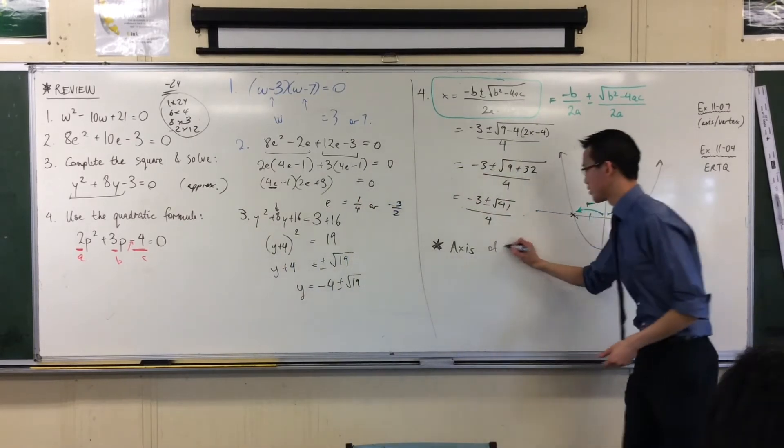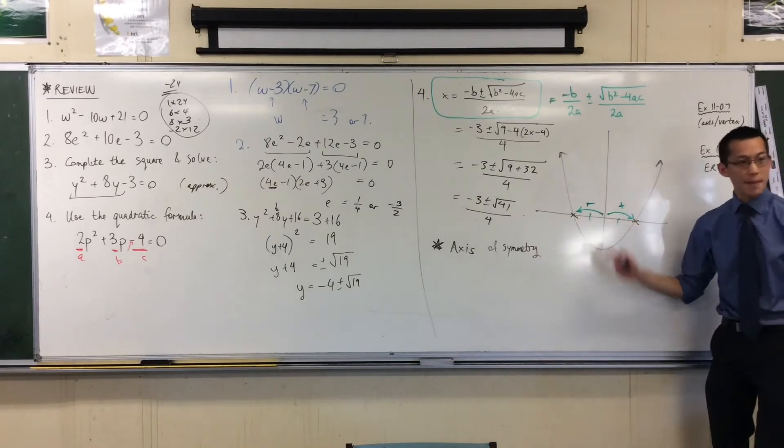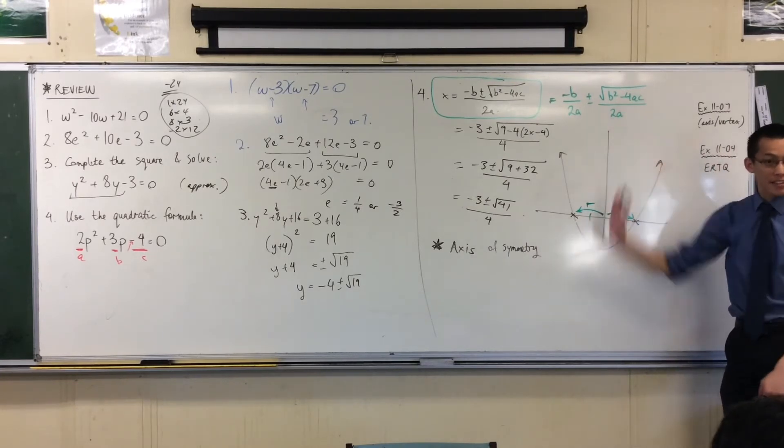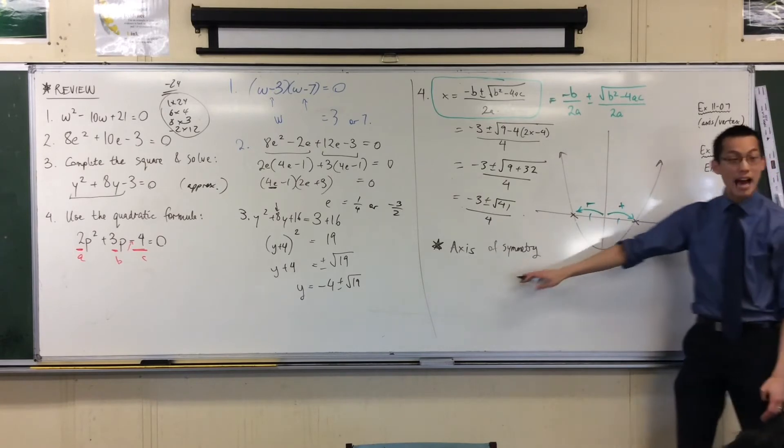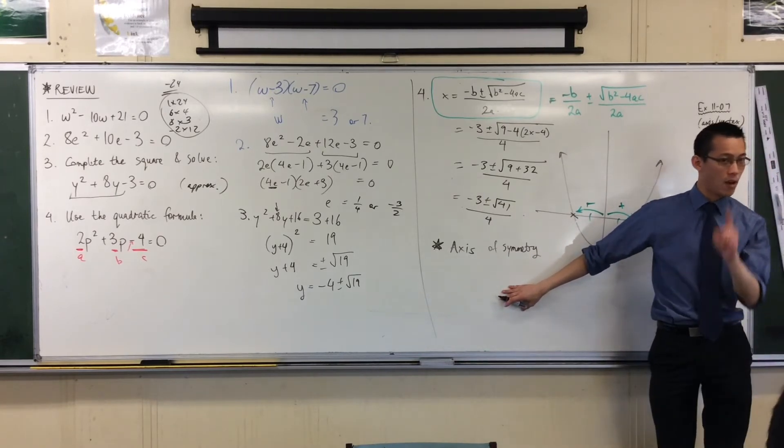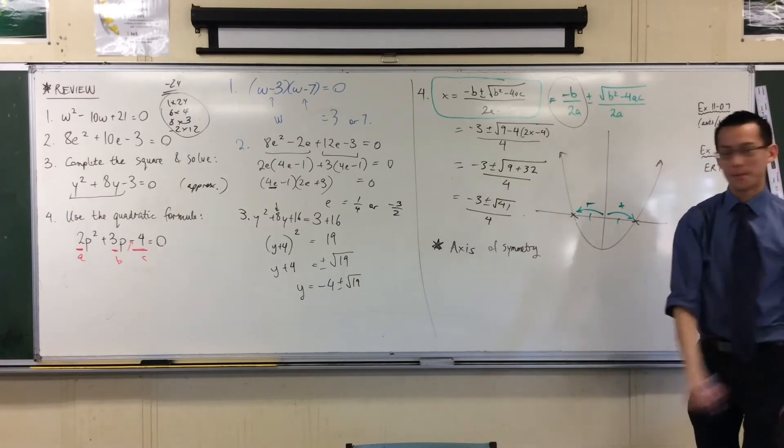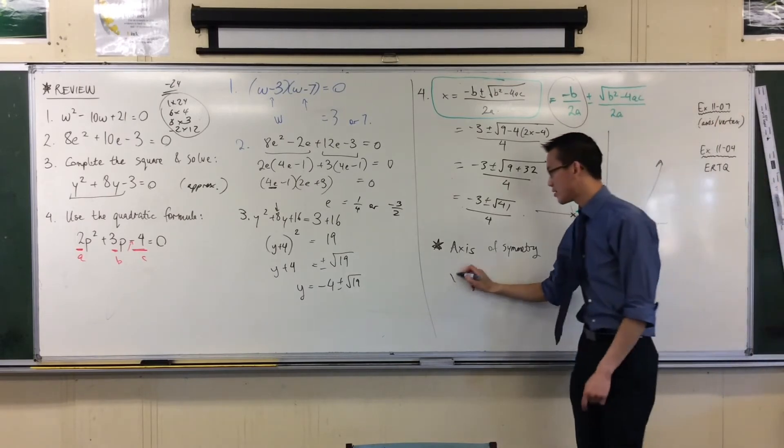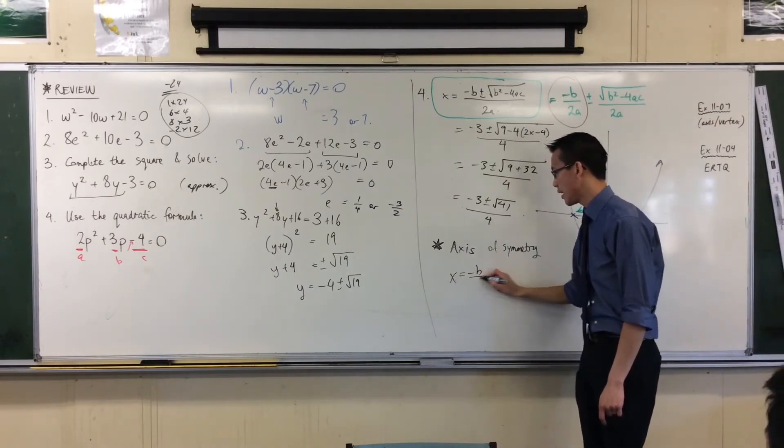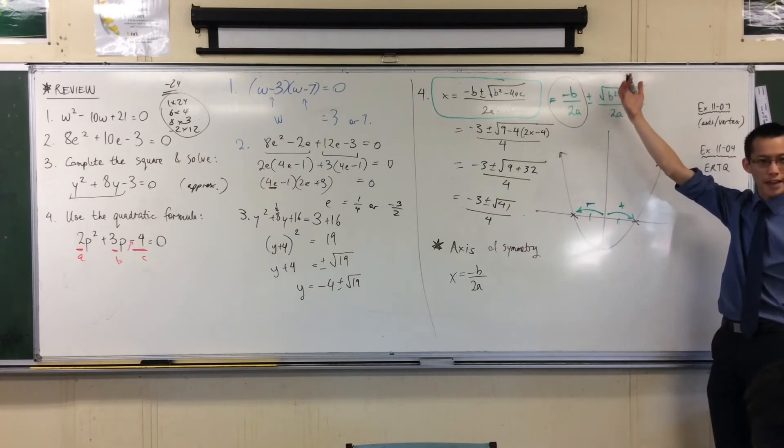So axis of symmetry. On my example here, it was like really right down there on the middle, but I could move this to the left, I could move it to the right, and still have an axis of symmetry somewhere. Where is it? It's this part here. It's that value that you start from. To get one root, you go to the left. To get the other one, you go to the right. So the axis of symmetry is here, just that bit on the front, minus b on 2a.